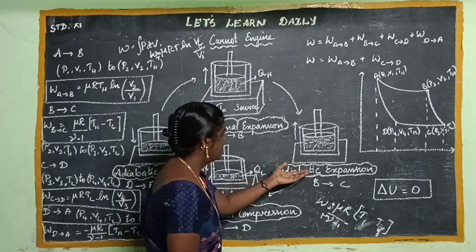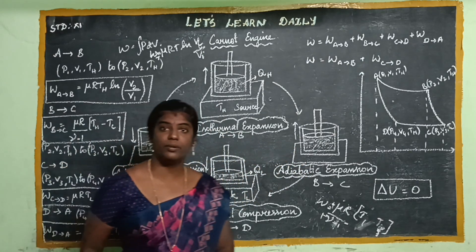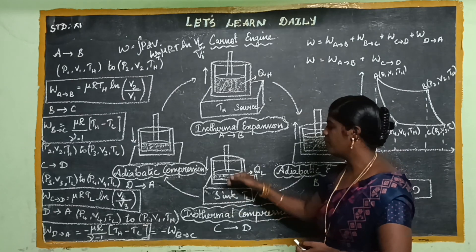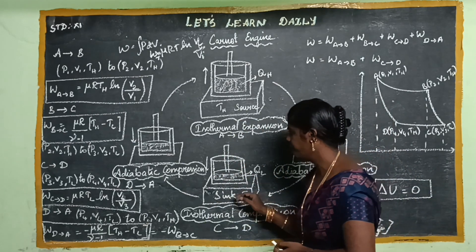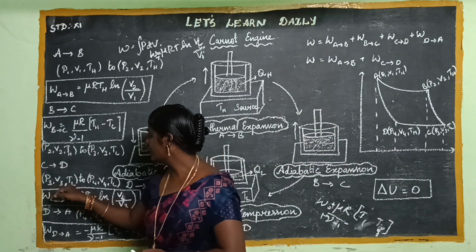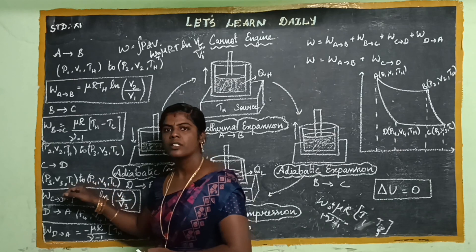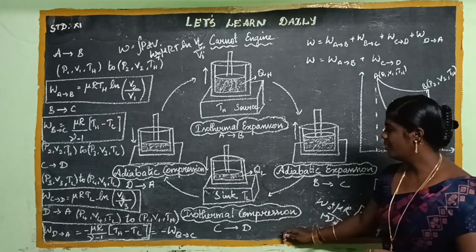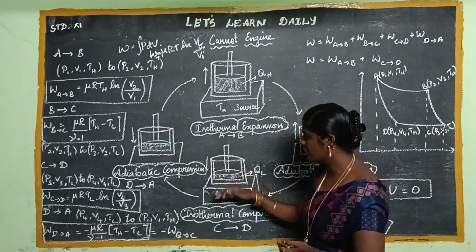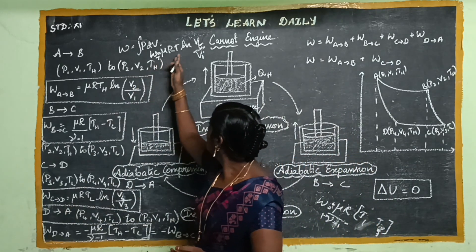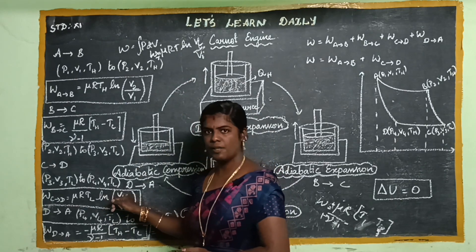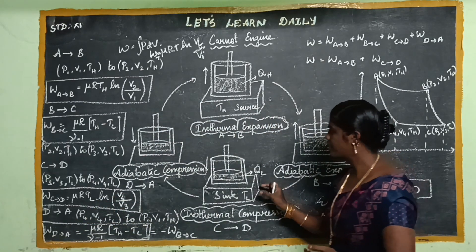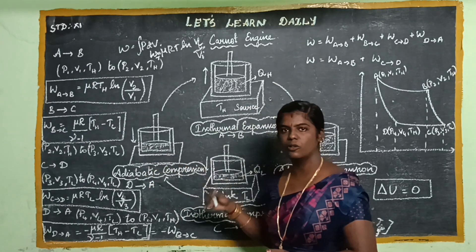Next, step C to D. The working substance is connected to the sink at low temperature TL. The initial state is P3, V3, TL and the final state is P4, V4, TL. Temperature is maintained but pressure and volume change. So this is isothermal compression. The work done is W = μRTL · ln(V4/V3).